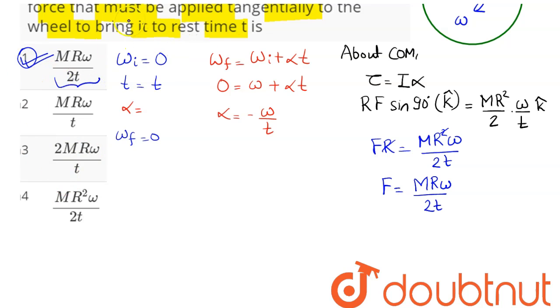The tangential force that must be applied tangentially to the wheel to bring it to rest in time t is MRω/2t. Hence option 1 is our answer.